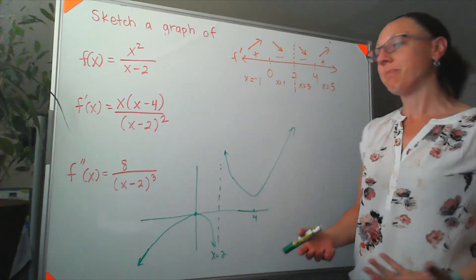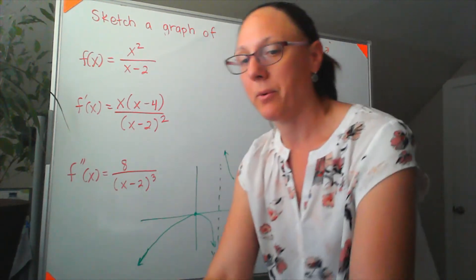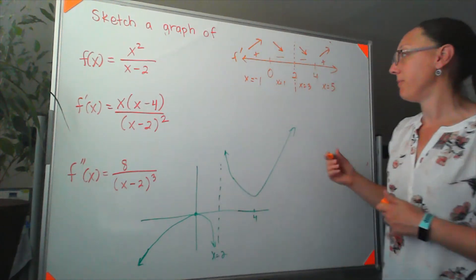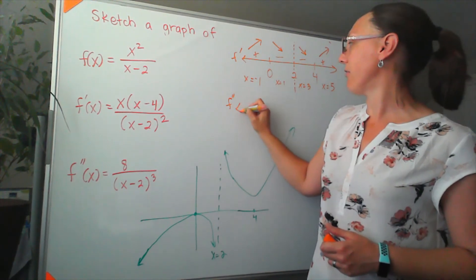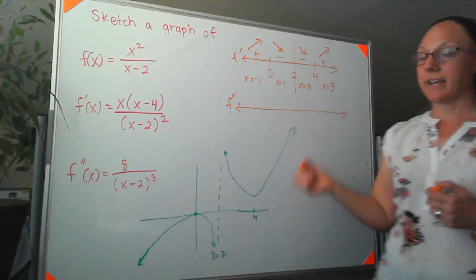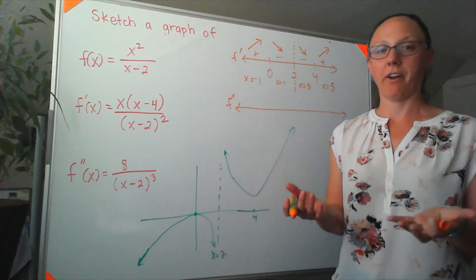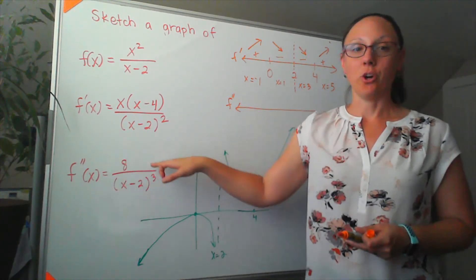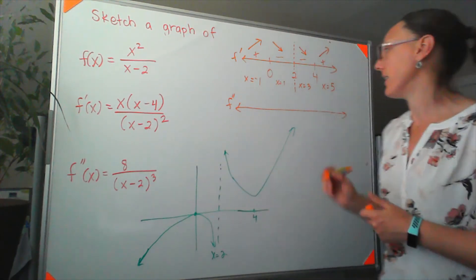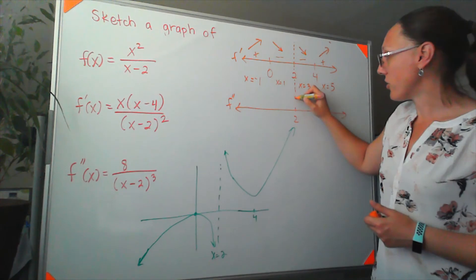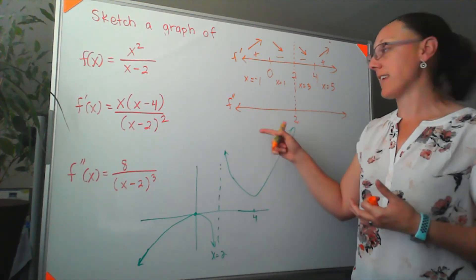Just to confirm that we've got our concavities correct on this, we're going to want to look at a number line for that second derivative. So if I do the same kind of thing here, but I line up my second derivative, then again, I'm looking for anything that makes my second derivative 0 or undefined. Well, it's not going to be 0. There's no way to make the numerator equal to 0, but it is undefined at 2. So again, here's my 2 and my vertical asymptote. And then I want to do the same thing and test some points on either side of that, plugging them into the second derivative.